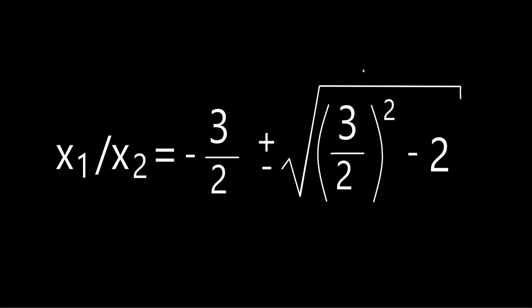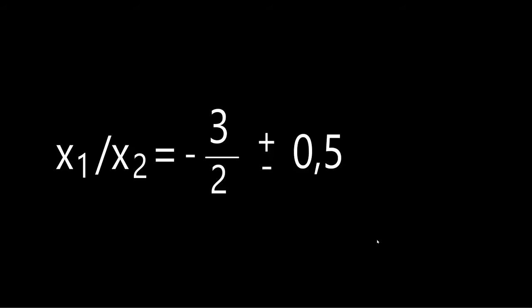And now that all the variables are gone on this side of the equation, you can just solve this. The plus minus here is the speciality. So let's get rid of the square root here first. The 3 divided by 2 to the power of 2 minus 2, and the square root of the whole equals 0.5.